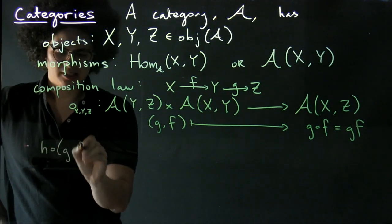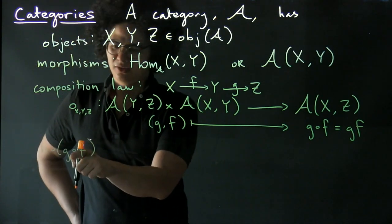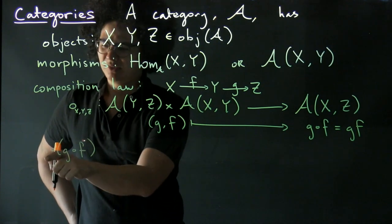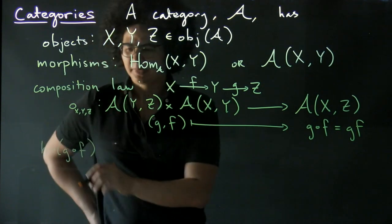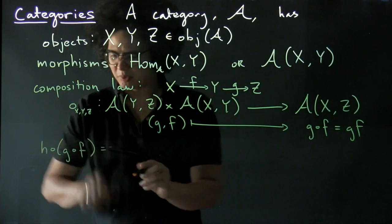H, G, and F—so recall that the domain of G has to be the codomain of F, and the domain of H has to be the codomain of G so that this is well-defined—